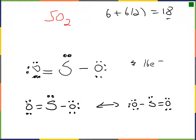Our two resonant structures for sulfur dioxide look like this — double bond on the left oxygen, or double bond on the right oxygen. Because these two structures are equivalent and both valid, we have resonance. The actual structure is the mathematical average between the two, giving us one and one-half bonds between the sulfur and each oxygen.